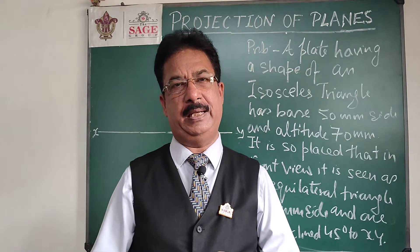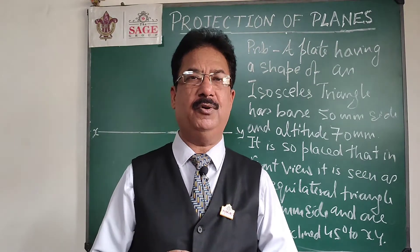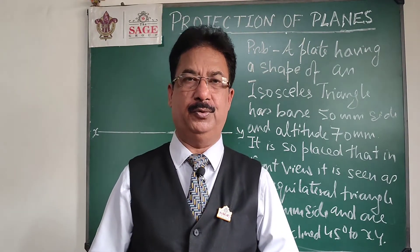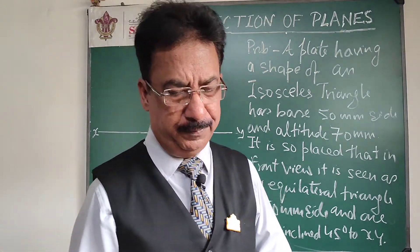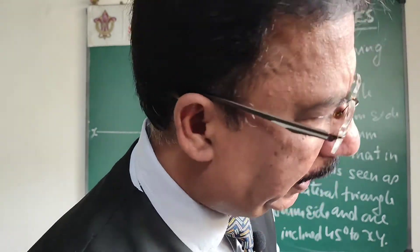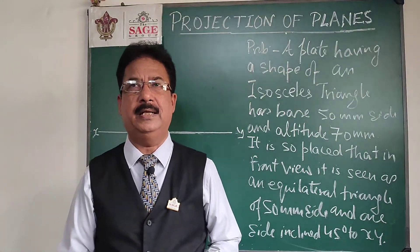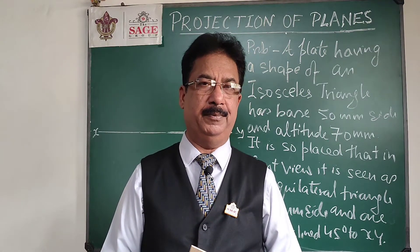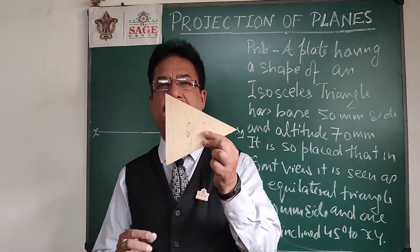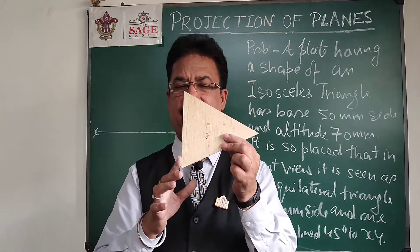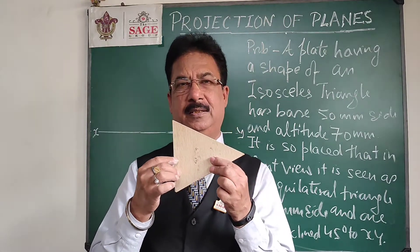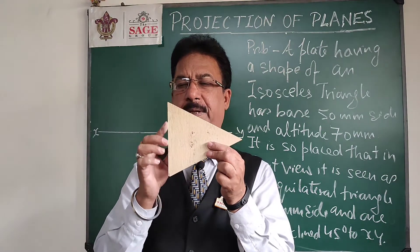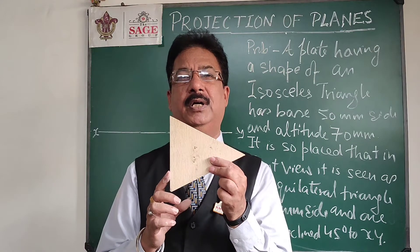If in the front view I need an equilateral triangle, it means I should start from the front view and place my whole plane — that is, our isosceles triangle — in the front view. It means I am going to keep the plane parallel to the VP. One key interest is that the 50 mm base side of the isosceles triangle should remain the same. This isosceles triangle has a length of 50 mm and an altitude of 70 mm. I am going to place it with the 50 mm side perpendicular to the HP.